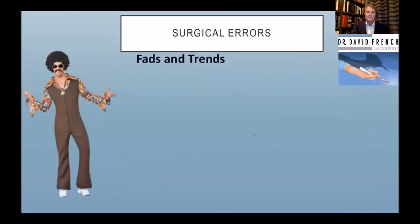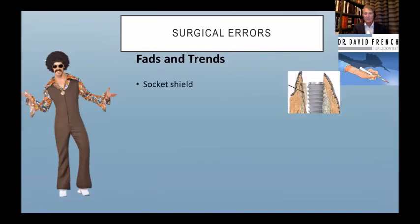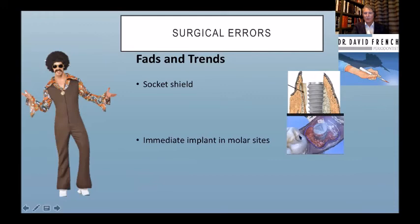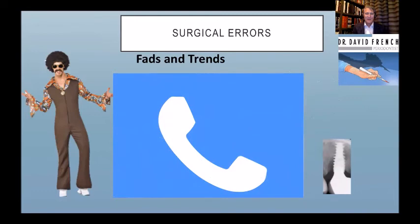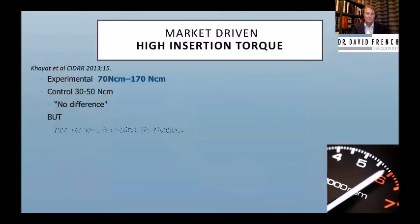We know that guides don't always fit or break, and 74% of the time if the stent doesn't seat fully the implant isn't placed deep enough — without a flap you never see that. Please raise a flap even if it's just a couple of millimeters. What about fads and trends? There's the socket shield technique, immediate implants in molars with 4 mm horizontal defects that don't fill with bone, or high insertion torque implants. My response: call me in five or ten years because that's when the problems show up.